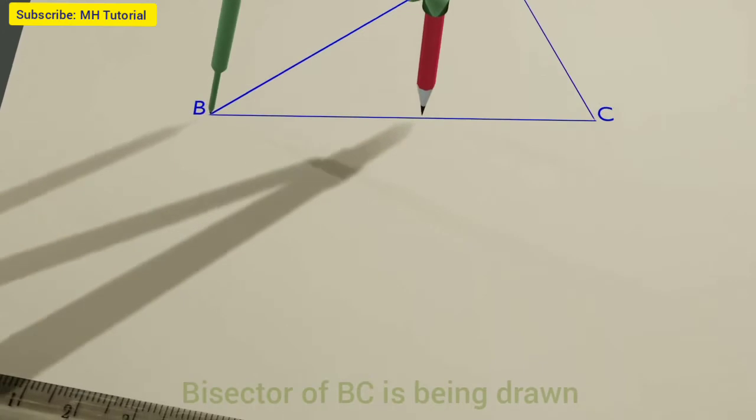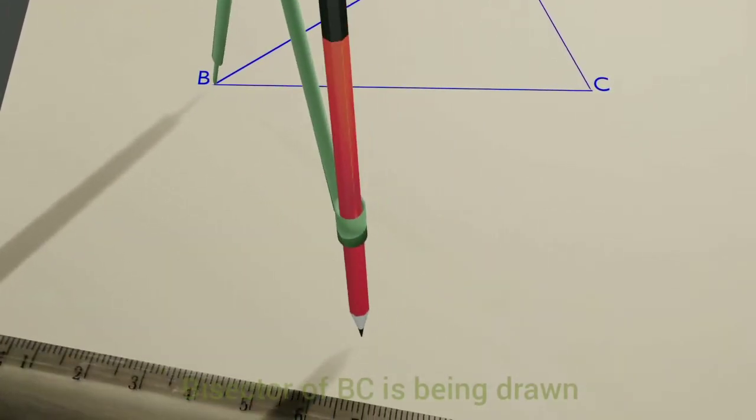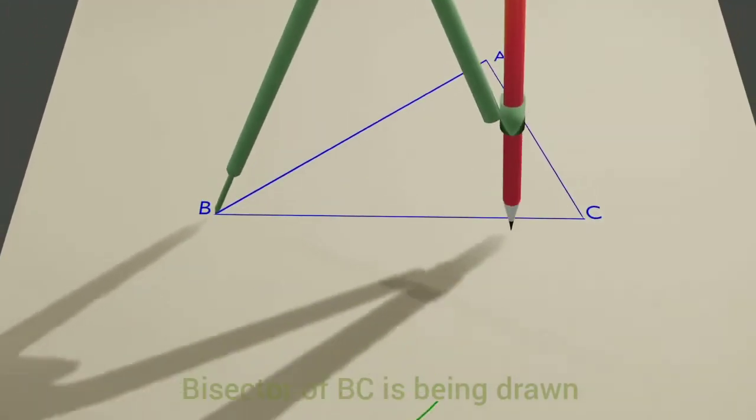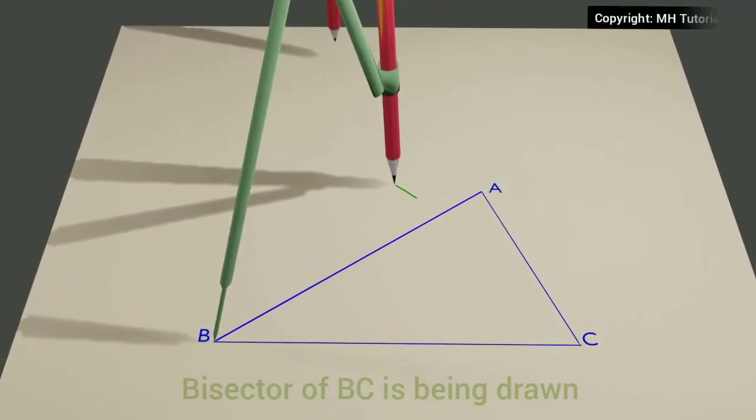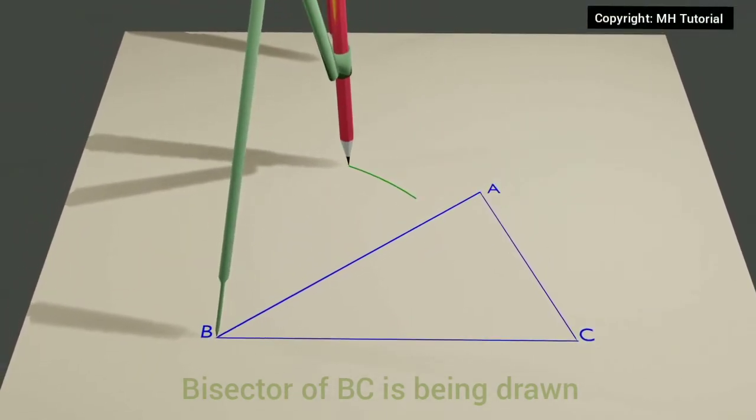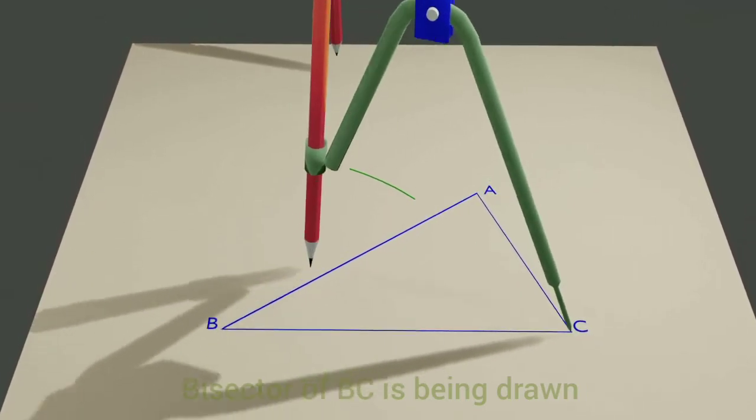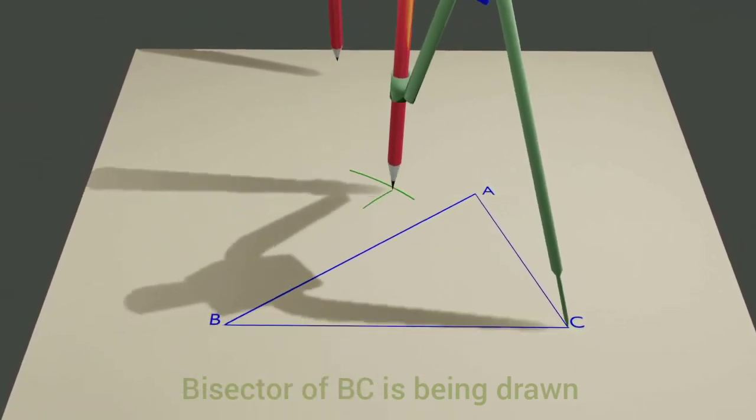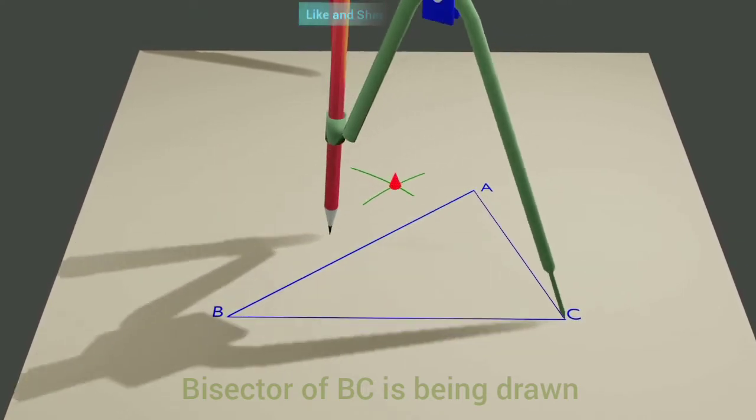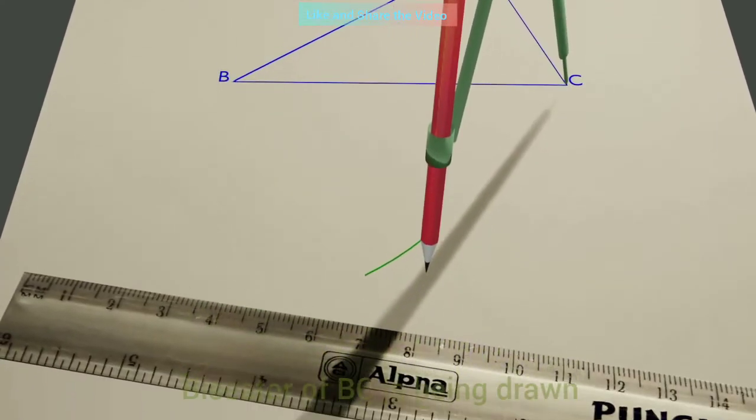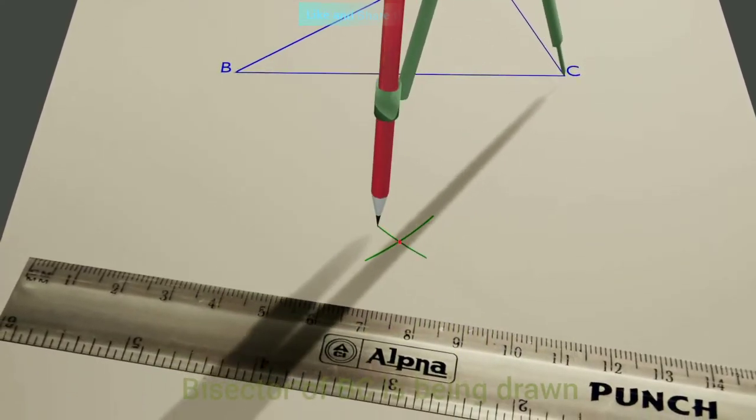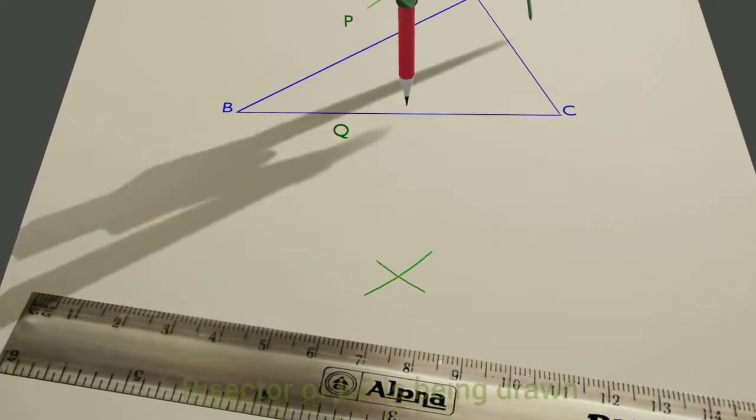Let us first draw the bisector of the arm BC. The name of this bisector is BC.